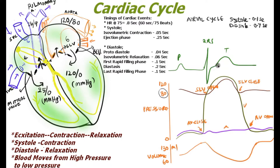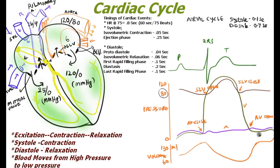The T wave on the ECG indicates ventricular relaxation. As soon as the T wave completes, the ventricle starts to relax and pressure drops from 120 toward zero. As pressure falls below the level required to keep the semilunar valves open, the semilunar valves close to prevent backflow of blood from the great vessels into the ventricle.